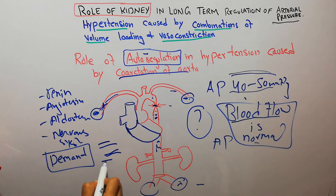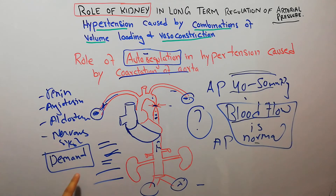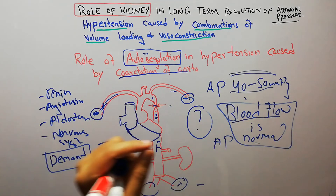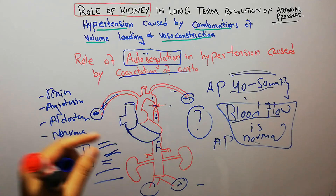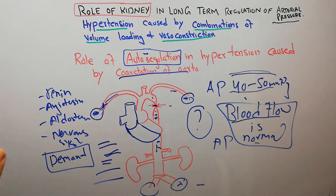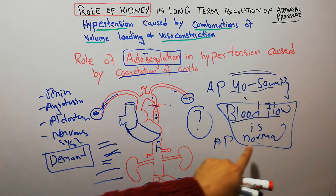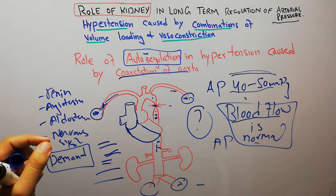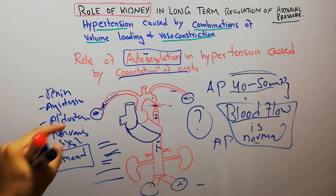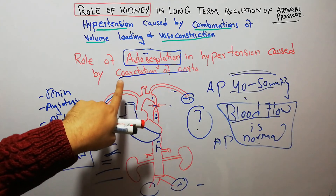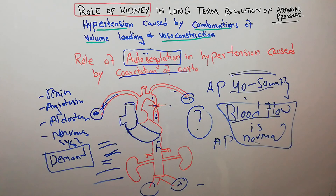If less blood flow is coming, the tissues will dilate the blood vessels bringing blood to them. This is autoregulation, which keeps blood flow normal to all tissues. It shows the importance of autoregulation in the human body — it normalizes blood flow to all tissues and keeps the blood flow to each and every tissue according to the demand of that tissue. That's all about the role of autoregulation in hypertension caused by coarctation of the aorta. Thanks for watching.